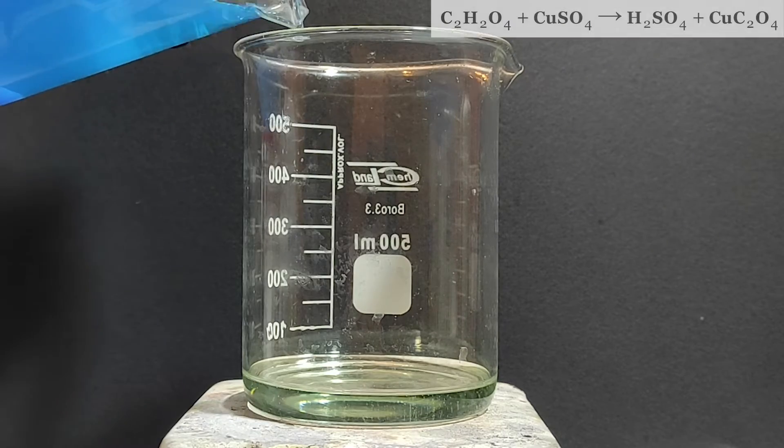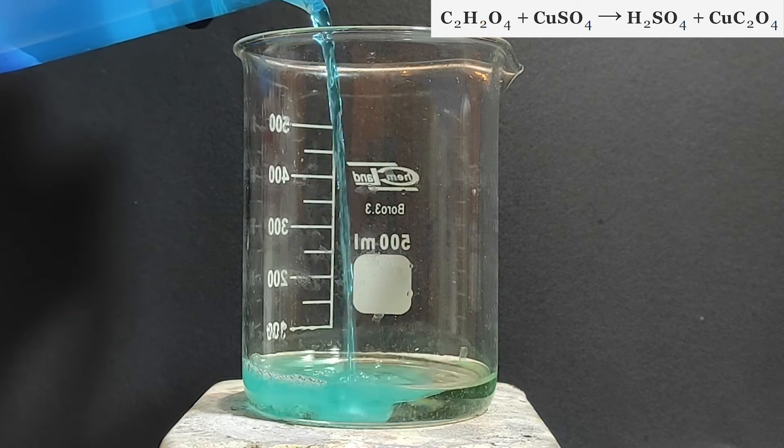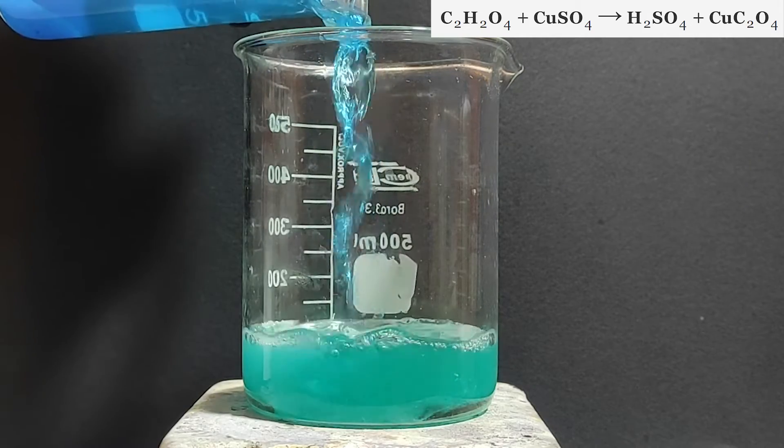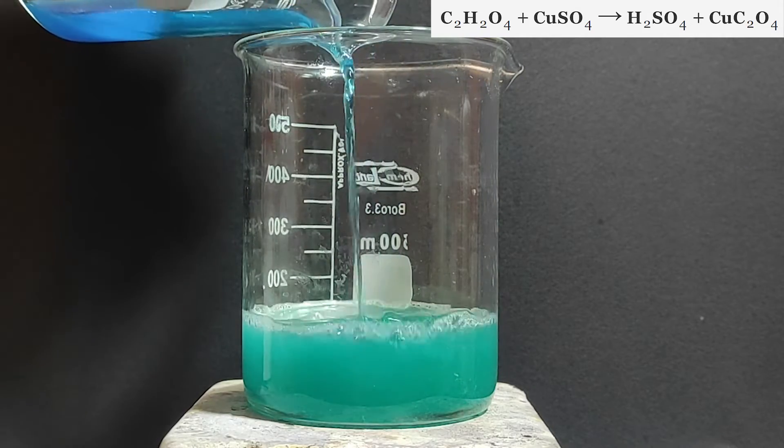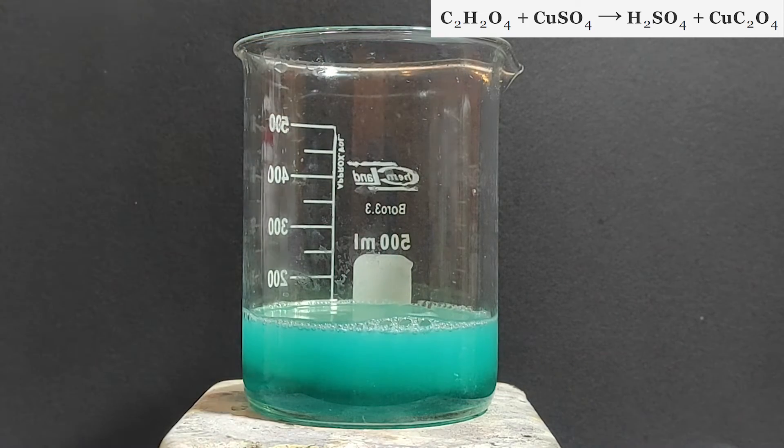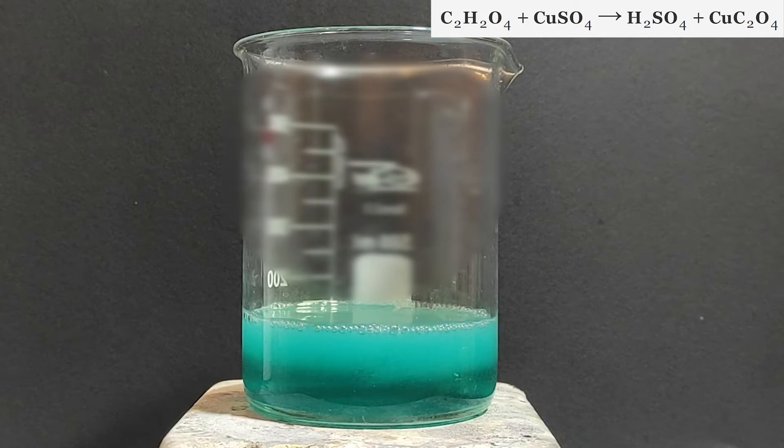So to the oxalic acid solution I've started adding the saturated copper sulfate solution. The oxalic acid reacts with the copper sulfate displacing the two hydrogens in the oxalic acid with the copper ion. This forms H2SO4 which is our sulfuric acid and as a byproduct it forms copper oxalate.